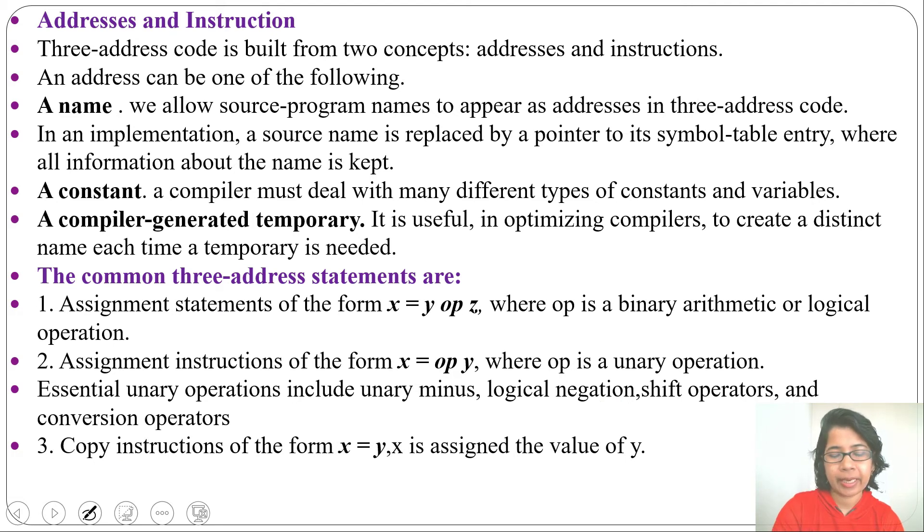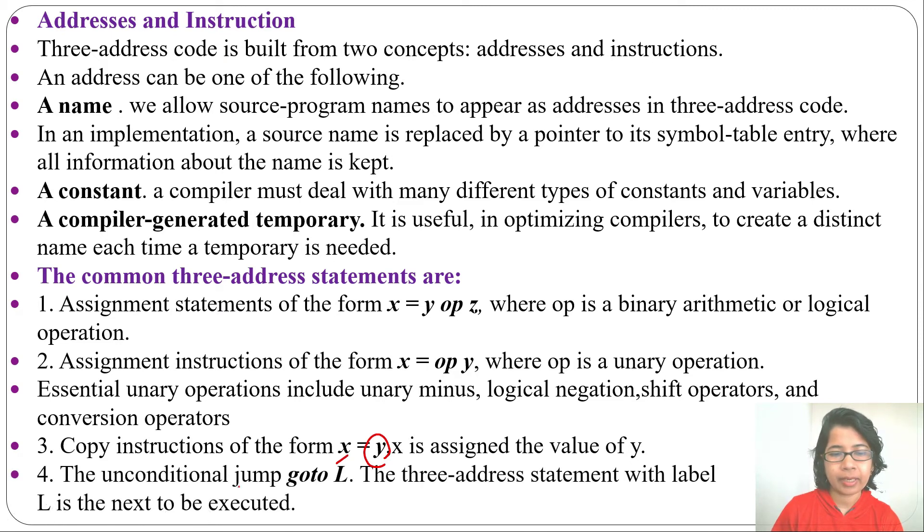Next, copy instruction x = y. The value of y will be assigned to x. Next, unconditional jump: goto L. Suppose some statements are given, here you are writing goto L and here some label assigned L. Then after this goto L, it will directly jump to this statement.